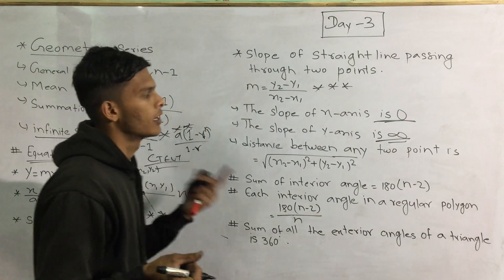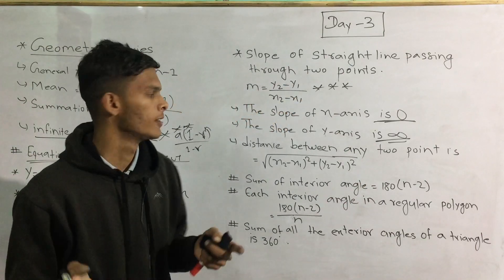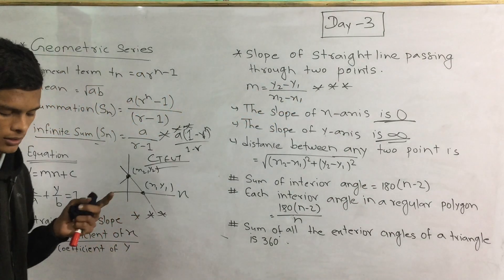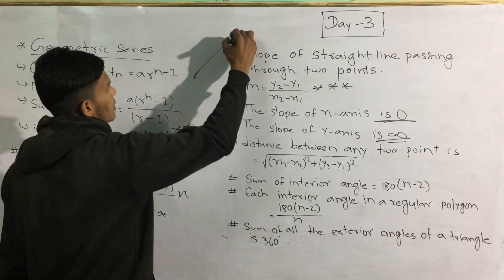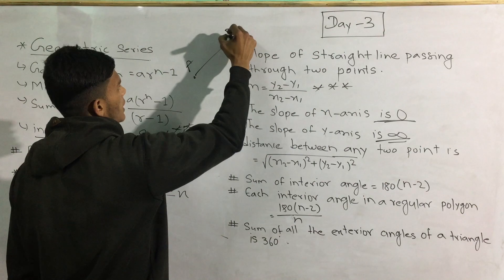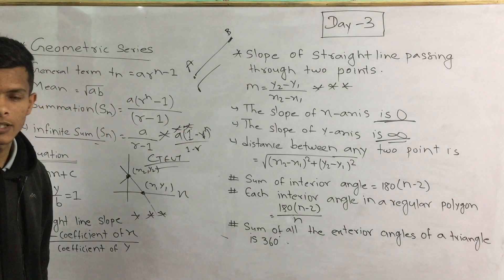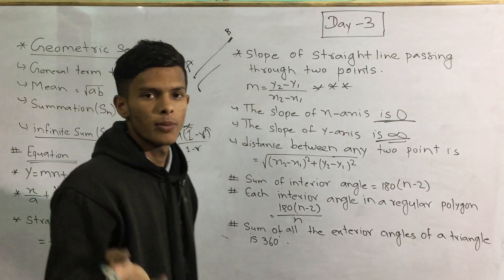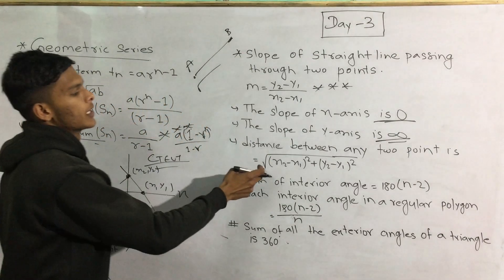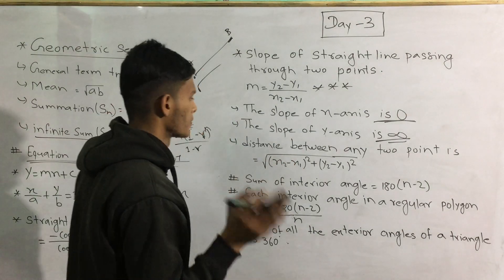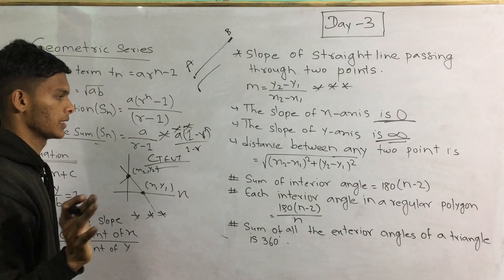So the slope of the y-axis is infinity. This is the distance formula: to get the distance between 2 points, we take the root of (x2 minus x1) squared plus (y2 minus y1) squared.